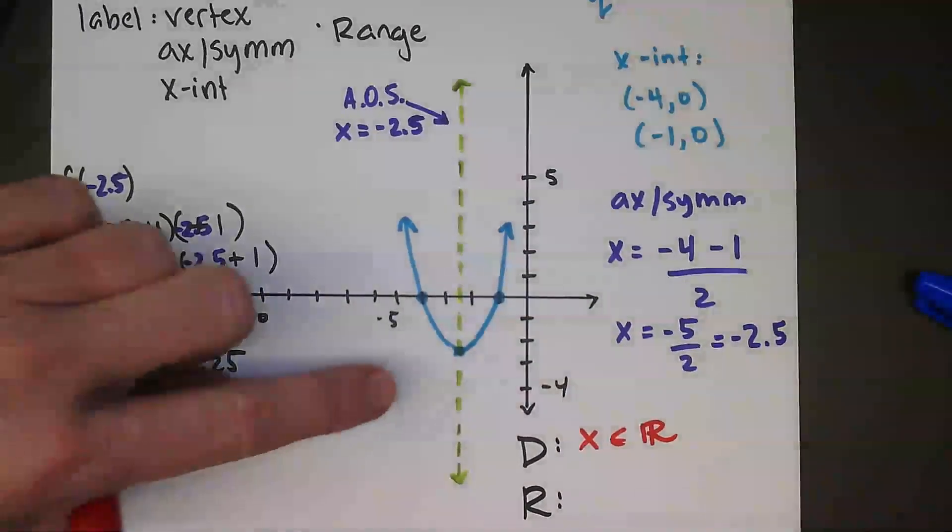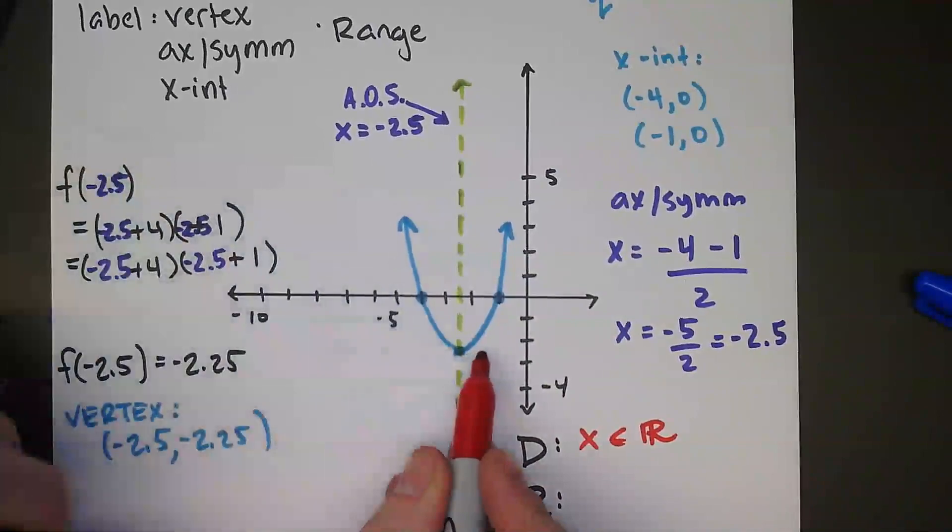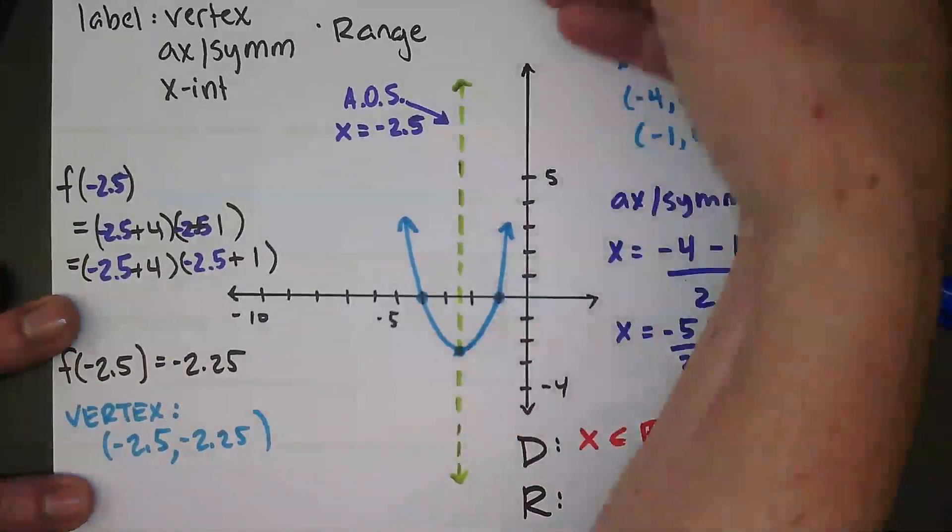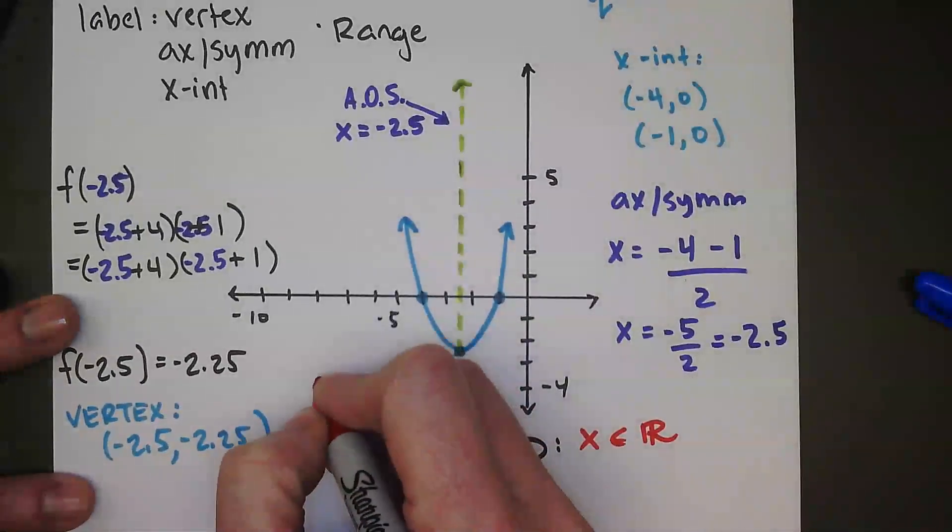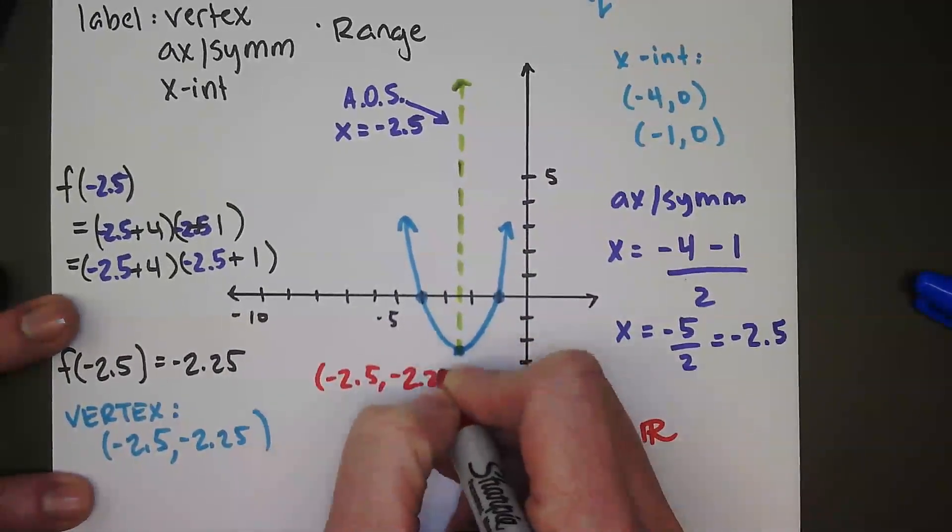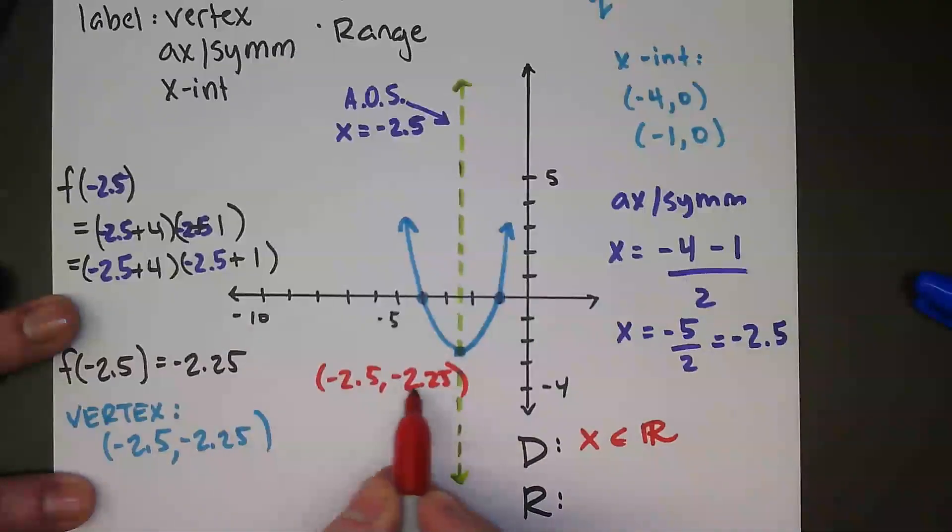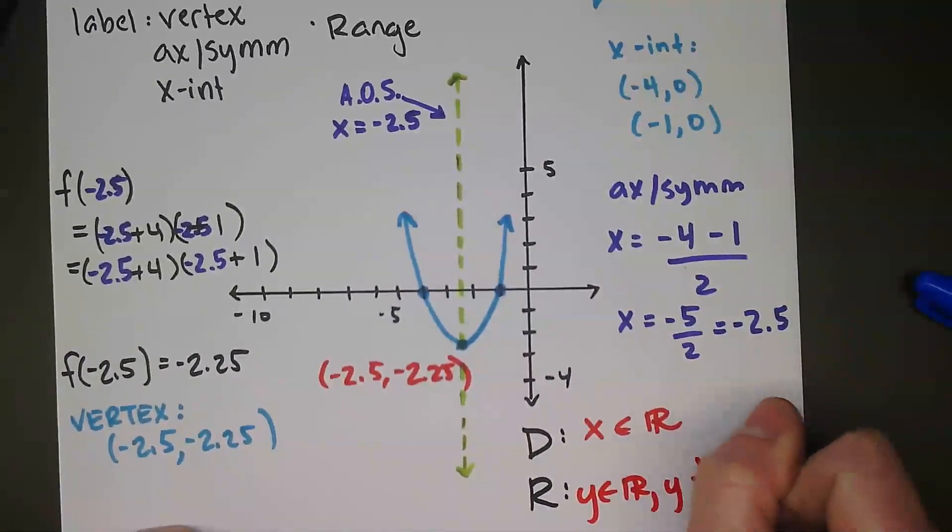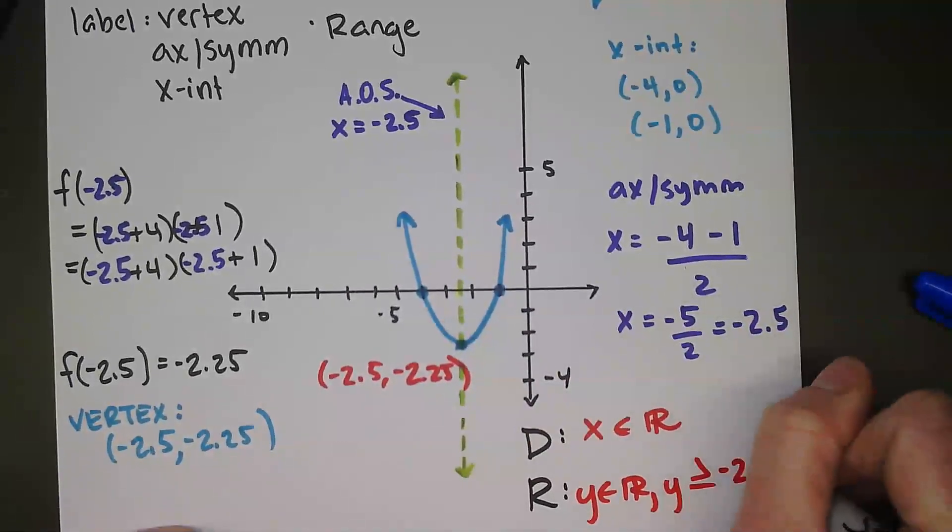And then our range is not all real numbers. It's got to be the low point of the y value here and then everything above it. So this coordinate is negative 2.5, negative 2.25. So it's everything above that y value. y is all real numbers, but y is greater than or equal to negative 2.25.